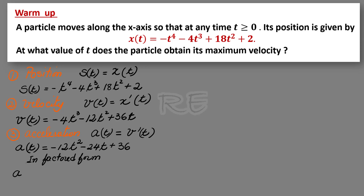In factored form, a of t is equal to negative 12 times t squared plus 2t minus 3, since we factor out negative 12.